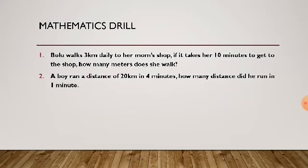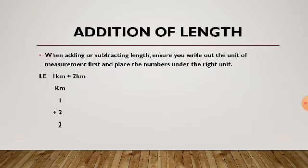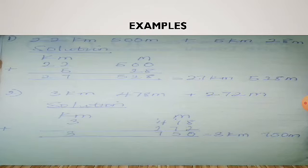We are going to take a mathematics drill — I'd love to have your answers in the comment section so we can treat it next time. Moving on to addition of length: when adding or subtracting length, ensure you write out the unit of measurement first and place the numbers under the right units. Make sure you write your unit of measurement — whether kilometers or meters — then write the numbers below the appropriate unit.